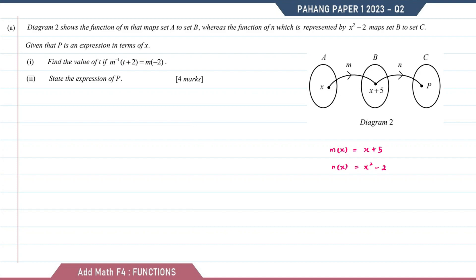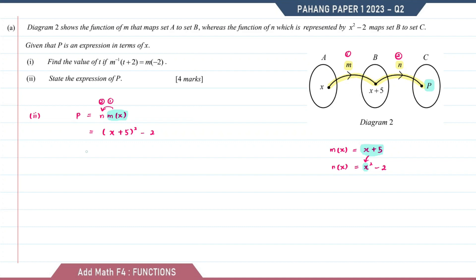Question number 2, state the expression of p. Based on the arrow diagram, function p has gone through two functions: m and n. Therefore p is a composite function. The name of the composite function starts with the second function then the first, so it is nm. To find nm, we substitute x plus 5 into x in function n: this equals (x plus 5) squared minus 2, expanding to x squared plus 10x plus 25 minus 2, giving x squared plus 10x plus 23.